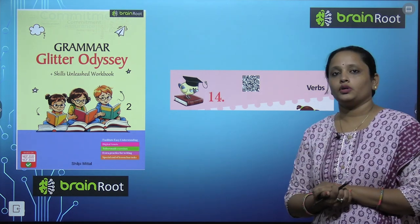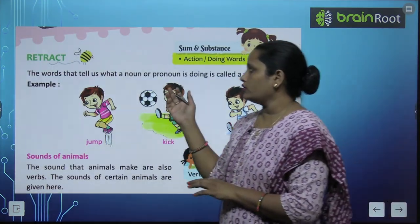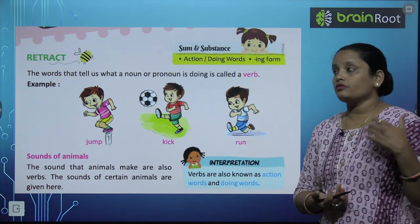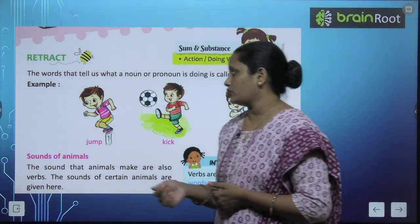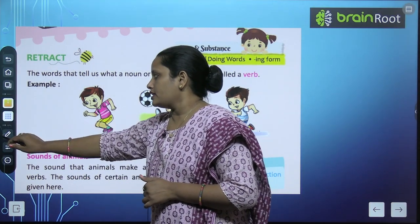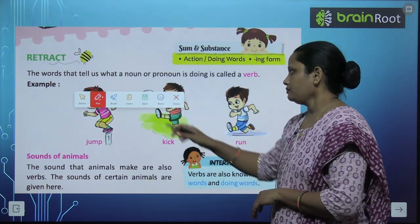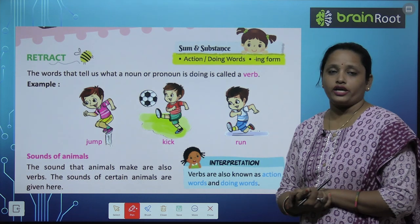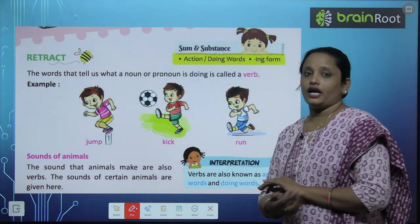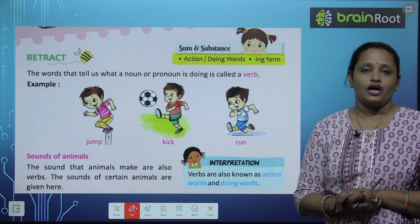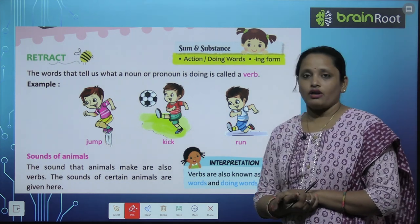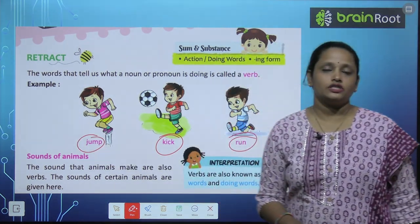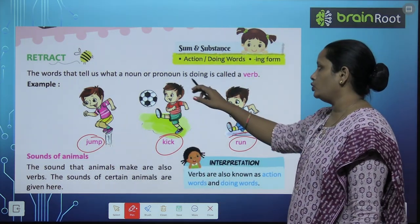So let's learn verbs. The words that tell us what a noun or pronoun is doing is called a verb. Aisay words jo yeh batate hain ki noun ya pronoun kya kar rahe hain, aisay words ko hum verbs kehte hain. For example: jump — boy kya kar raha hai? Jump. Boy ne phir kya kiya? Kick. Again the boy is running. So run, kick, and jump — these words are verbs, or doing words.